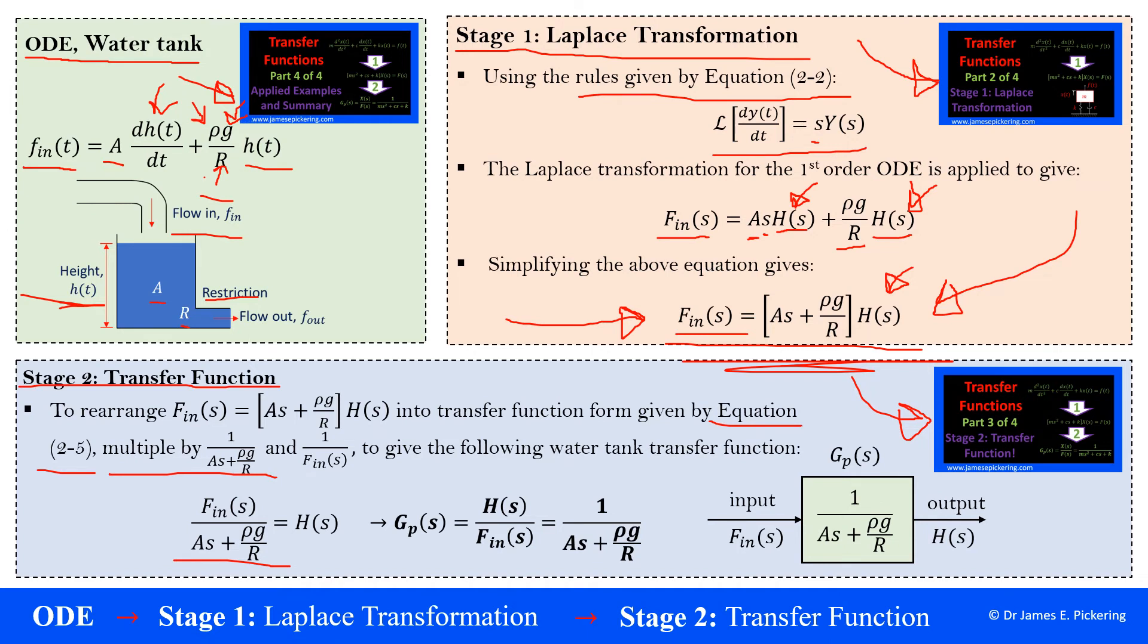Because we want it in the form of obviously output over input, so we've got output here is equal to input over the system coefficients. What we can do now is just cross multiply by 1 over F subscript in, and if we do that, then that'll put it into the form given effectively by the equation here. So H(s) over flow in of s is equal to now 1 over As plus ρg/R. So that there is your form of transfer function.